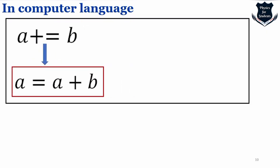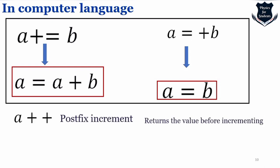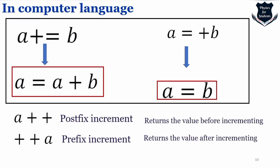In computer language, A += B means A = A + B, and A = +B means A equals B. A++ means postfix increment — returning the value before incrementing — and ++A means prefix increment, returning the value after incrementing. This shows how the plus sign is used in different ways in computer language.